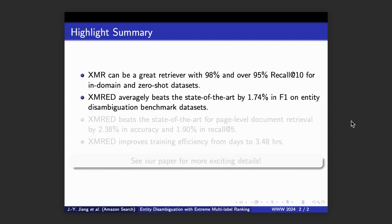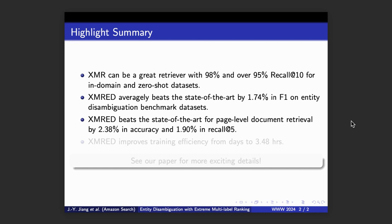Our proposed framework, XMRED, averagely beats the state-of-the-art models by 1.74% in F1 score on Entity Disambiguation benchmark datasets. Our framework also beats the state-of-the-art for the task of page-level document retrieval by 2.38% in accuracy and 1.9% in Recall F5.